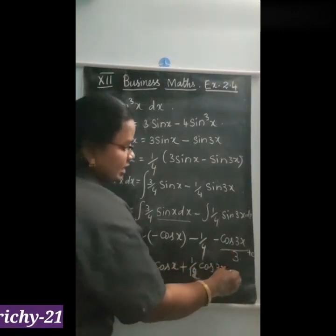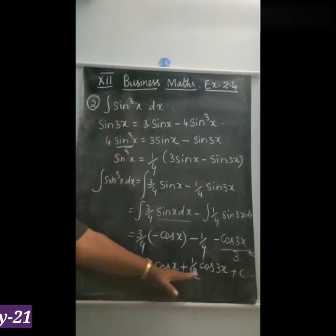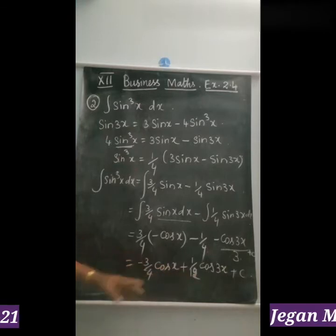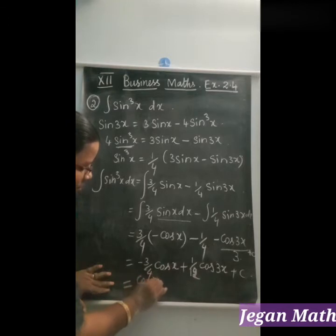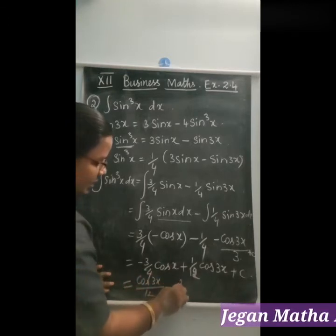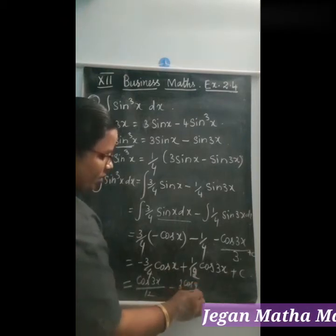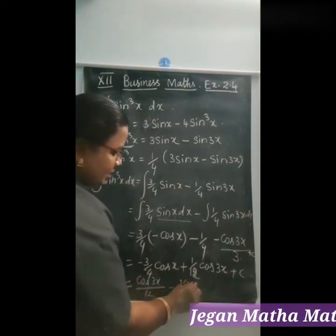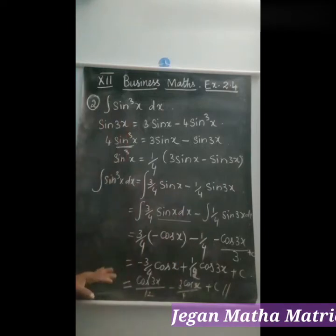The final result is: cos 3x divided by 12 minus 3 cos x divided by 4, plus c. This is the answer for the second question.